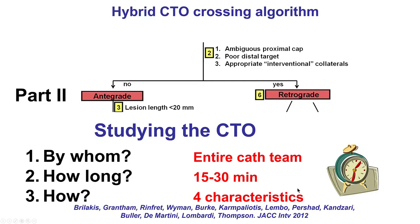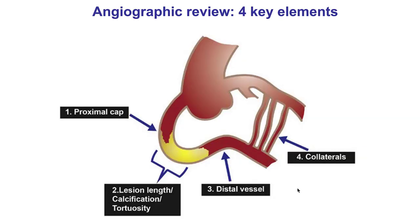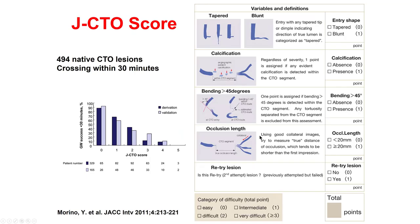Ideally, the review of the angiogram should be done by the entire cath team — attendings, fellows, technicians, and representatives — for at least 15 minutes to allow enough time to better understand the coronary anatomy. There are four key characteristics to look for: first, the proximal cap or beginning of the occlusion; second, the occlusion length and composition; third, the quality of the distal vessel; and fourth, the various collaterals.